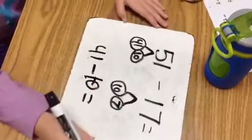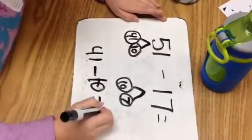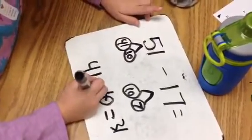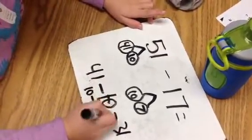41 minus 10. Then we'll do our 1s minus 1s. Those are the right side bubbles.